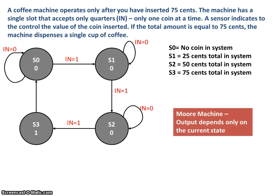This is a Moore machine because the output depends only on the current state and is independent of the input. The output change happens when it's in a particular state — in this case, S3. Now we need to decide on the state encoding. We'll choose a binary state encoding, which requires a total of two flip-flops. If we chose one-hot encoding, with four states we would need four flip-flops. So we'll do this exercise using binary encoding.